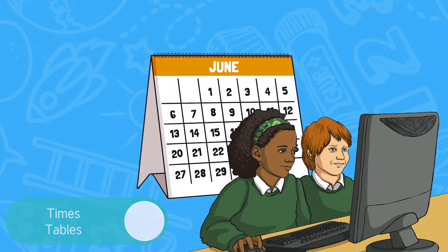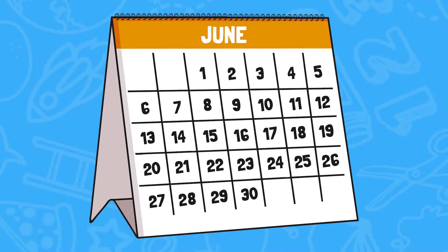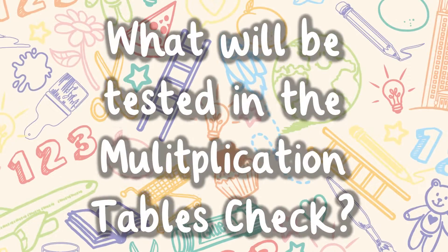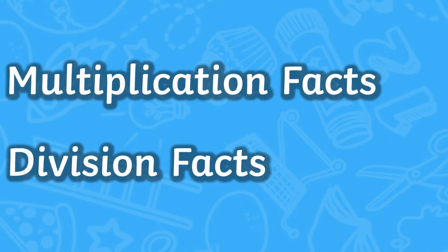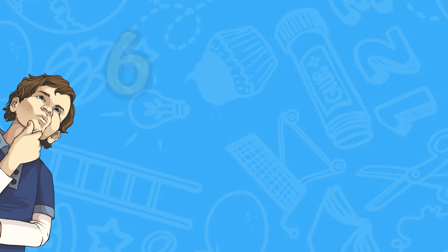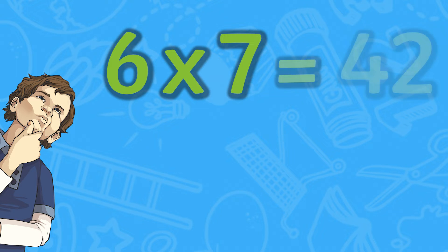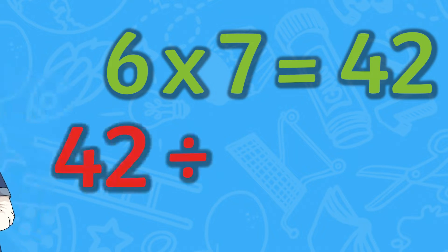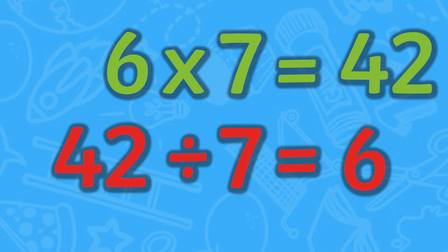There will be a three-week window in June for pupils to complete the online assessment. The check will only assess multiplication facts and not the corresponding division facts. For example, a child might be tested on 6 times 7, which equals 42, but not 42 divided by 7, which equals 6.